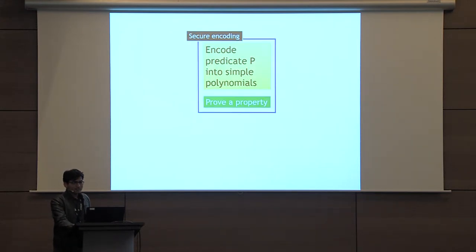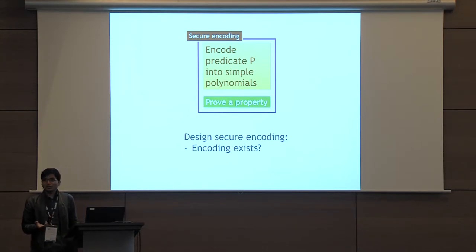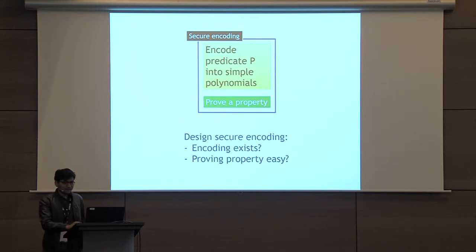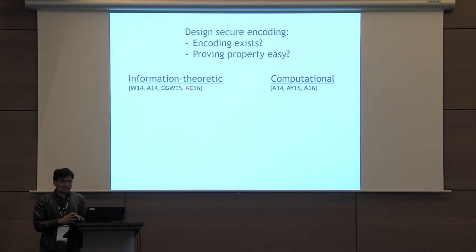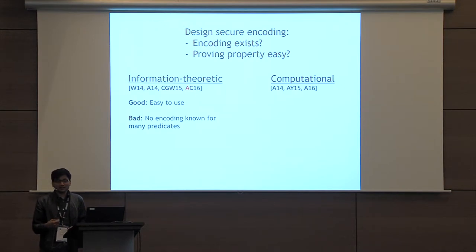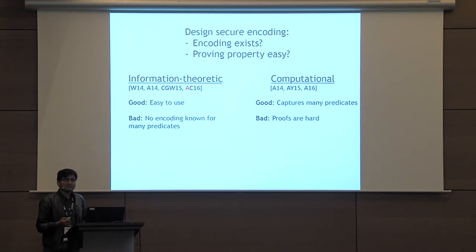This leads to the next question: how easy is it to design secure encodings for a predicate? This is really a two-part question: does there exist an encoding for some predicate which satisfies a property, and how easy is it to prove that property? All the properties that we know so far are either information theoretic or computational. Information theoretic properties are very easy to use, but the problem is that there are many different predicates for which we do not know of any information theoretically secure encodings, even though there are direct constructions available from some assumption on bilinear maps.